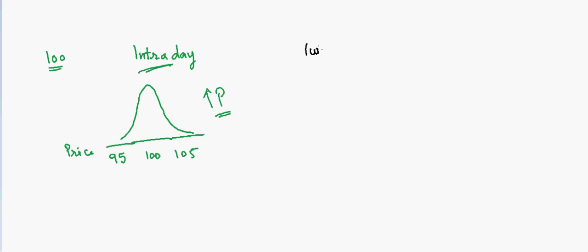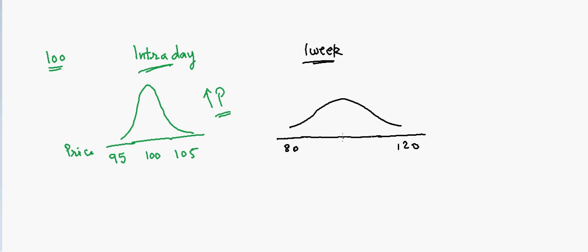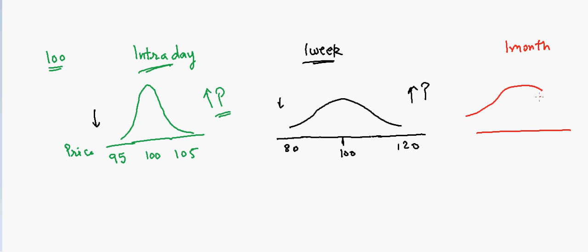These are all just illustrative numbers. If I'm talking about one week, the probability distribution looks wider — maybe ranging from $80 to $120. In that case, the probability of reaching $80 is much higher over one week than intraday. If I extend to one month, even more things can happen.